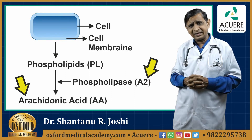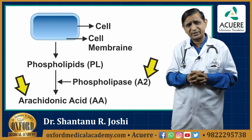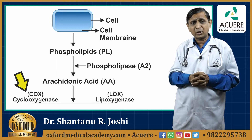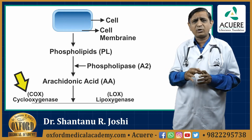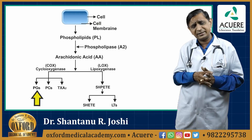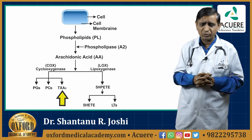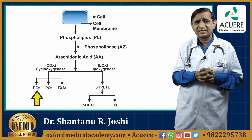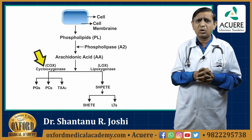This arachidonic acid can further be converted into different metabolites by two different pathways. The important pathway is known as the cyclooxygenase pathway, popularly known as the COX pathway. When arachidonic acid enters the COX pathway, it will give you three important inflammatory chemicals: prostaglandins in different forms, prostacyclins, and thromboxane A2, popularly known as TXA2. In general inflammation, this pathway operates and prostaglandins are the major mediators.